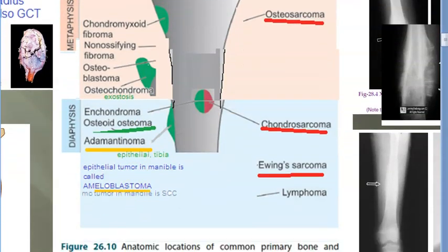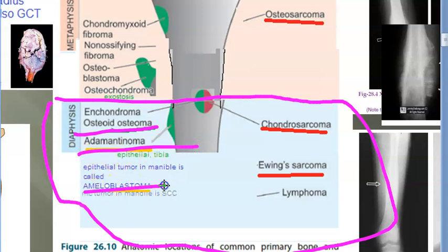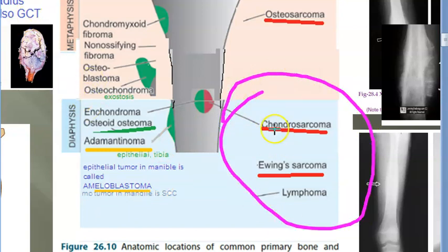Moving to diaphysis, which has a lot of things. In the diaphysis you should remember osteoid osteoma — this is commonly asked in the exam. It is the commonest true benign tumor of bone. Other names here include adamantinoma, which is an epithelial tumor of the tibia, and ameloblastoma, which is of the mandible.